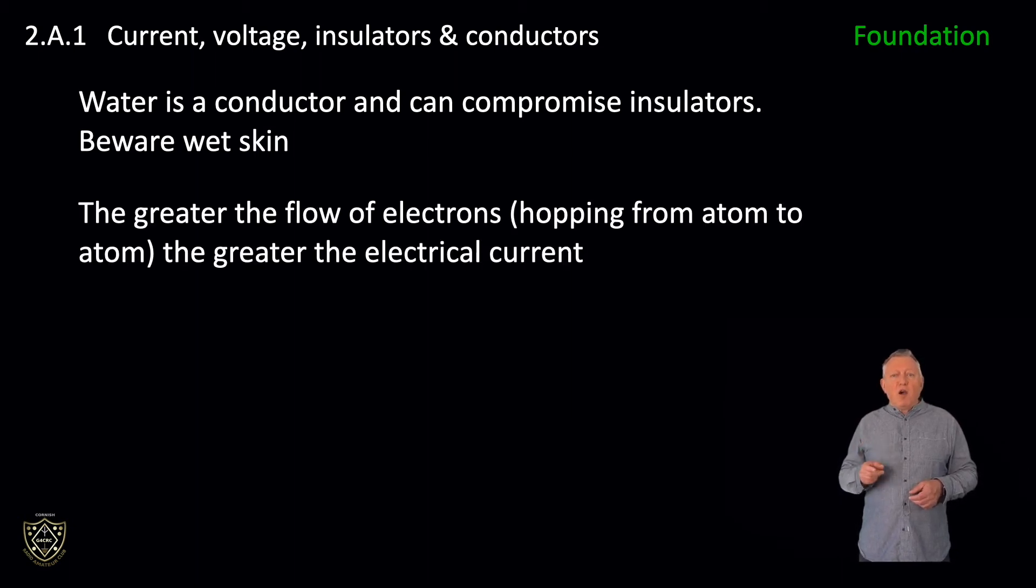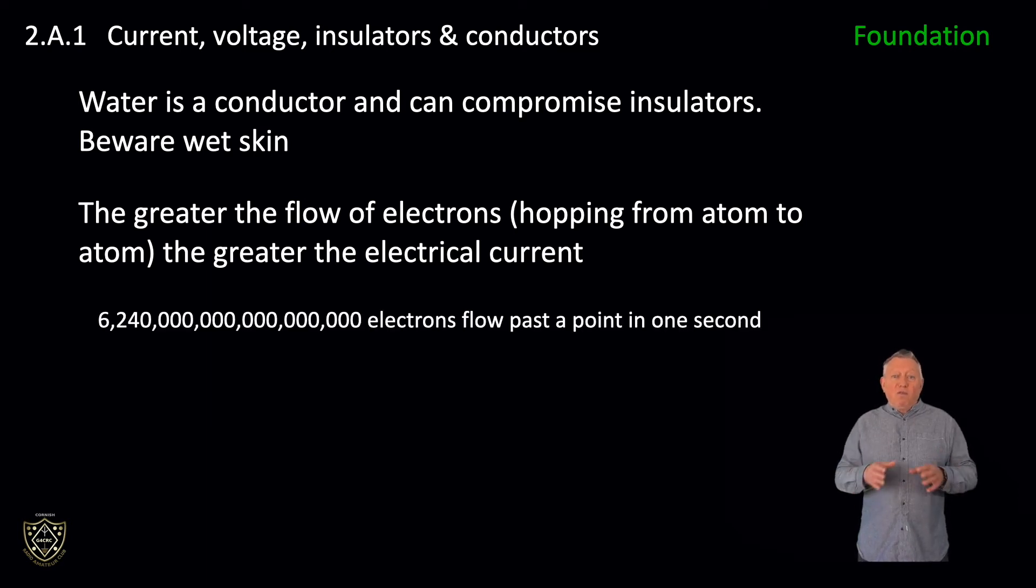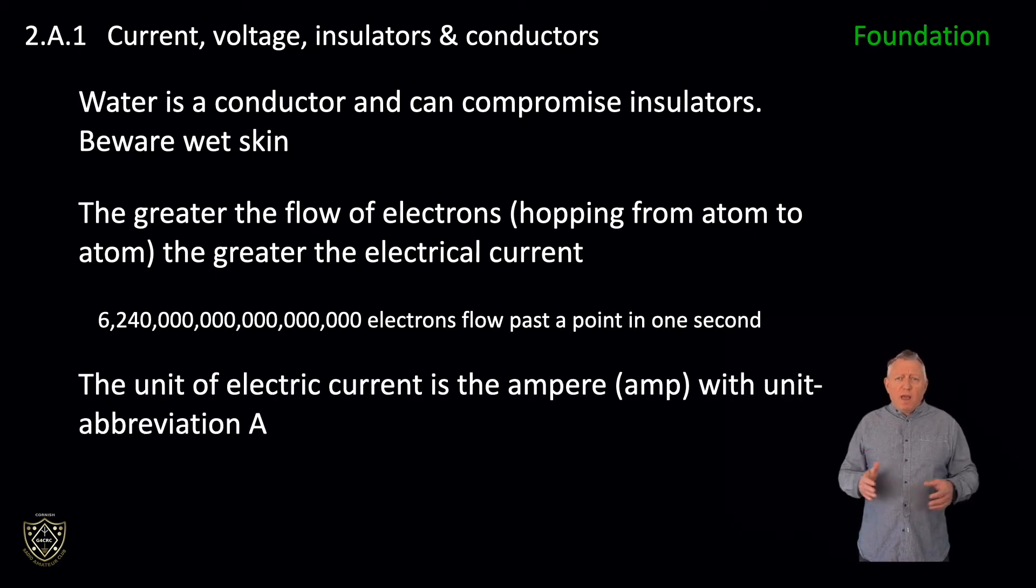The greater the flow of electrons hopping from atom to atom, the greater the electrical current. If approximately 6.24 followed by 19 zeros electrons flows past a point in one second, then a current of 1 ampere is said to flow. The ampere is usually shortened to amp and abbreviated A. This is a learning point. The unit of electrical current is the ampere with unit abbreviation A.